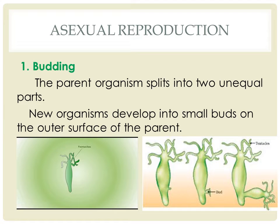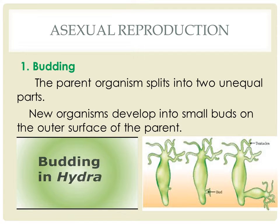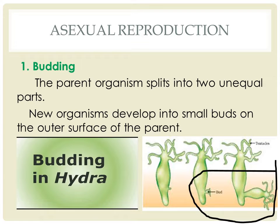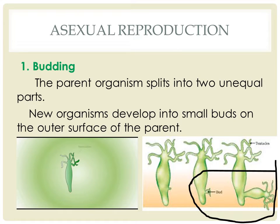Going to asexual reproduction, animals reproduce asexually through the following ways. The first one is budding, where the parent organism splits into two unequal parts. The buds break off and live independently, or may remain attached to the parent forming a colony. Budding occurs in hydra as well as in sponges and some worms.